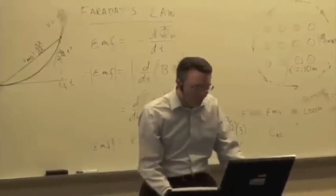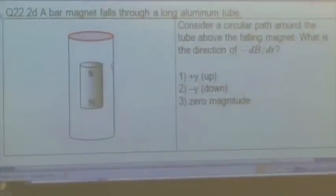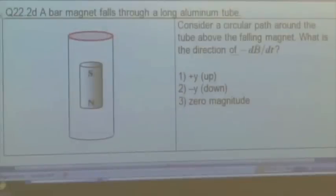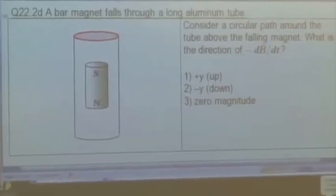Let's skip these questions here. So here's our bar magnet. And let's say we drop it where the north pole is pointing down, south is up. And I want you to just focus on the top, just at the top edge of the ring of the tube here. And we say, consider a circular path around the tube above the falling bar magnet. What's the direction of negative dB/dt? So positive y is upward, negative y is downward, or is it zero magnitude? Now you have to be careful with the geometry. So I would suggest drawing a picture, drawing initial and final magnetic fields, and see if you can figure out the direction of negative dB/dt.